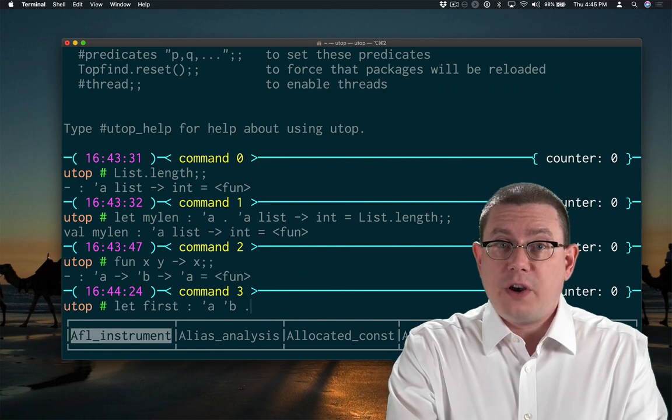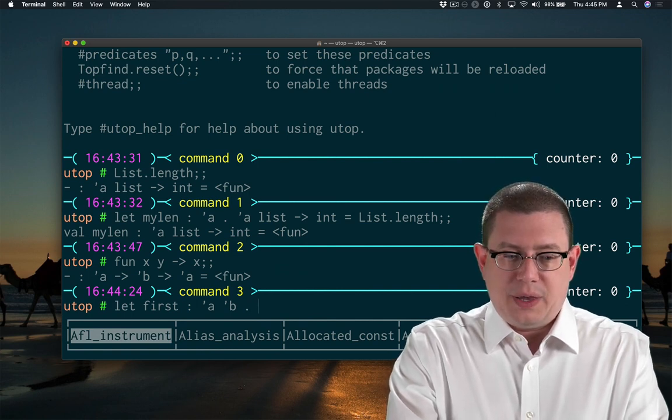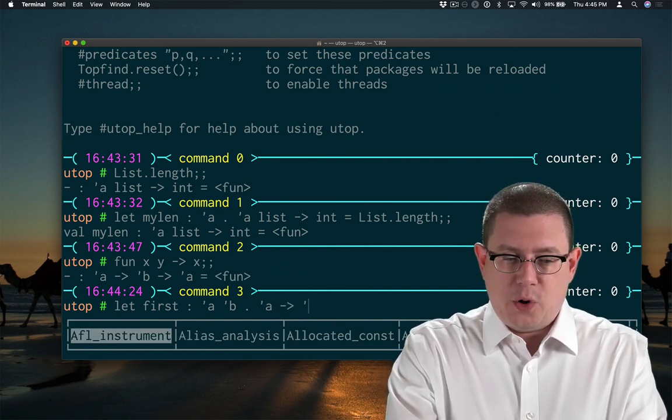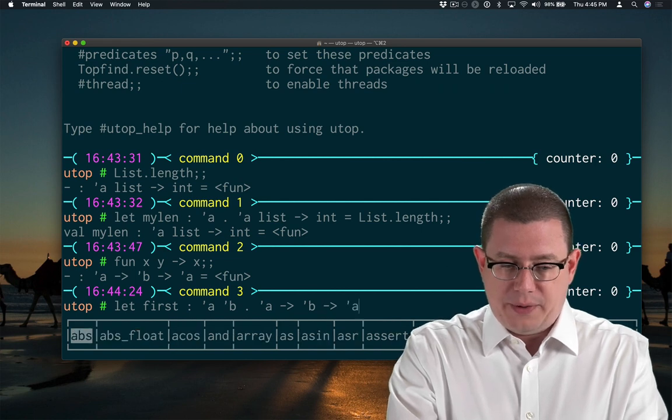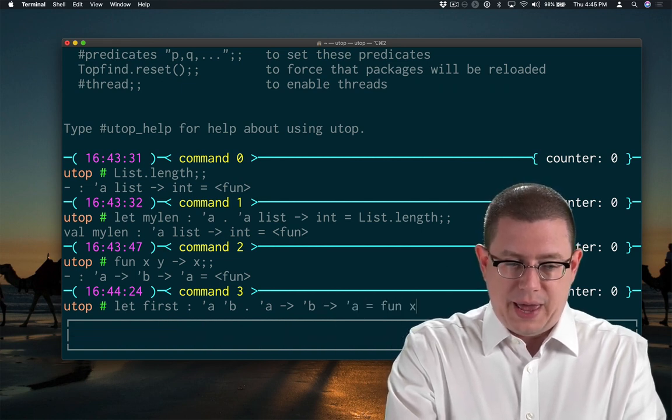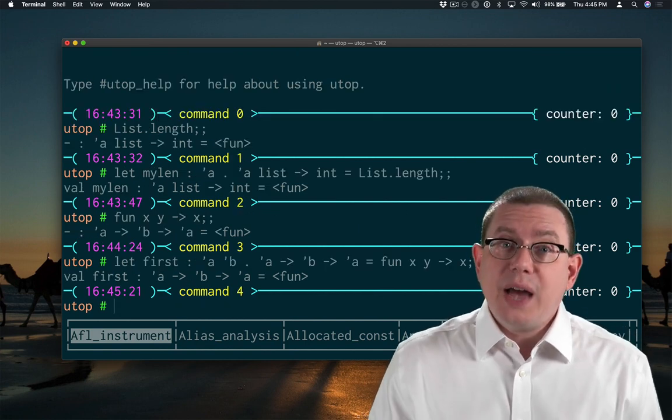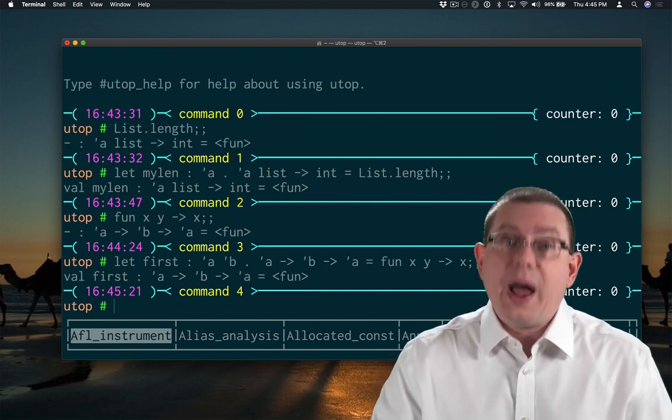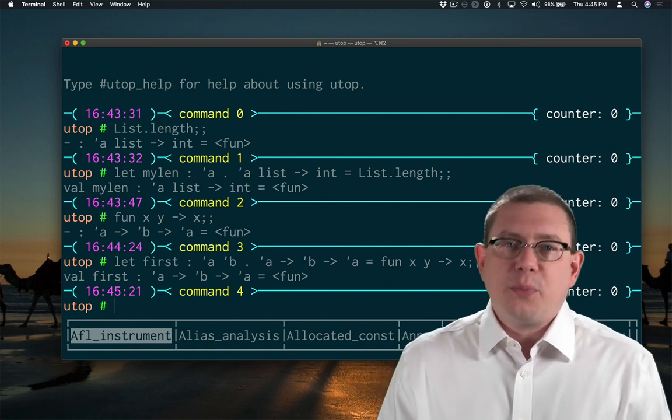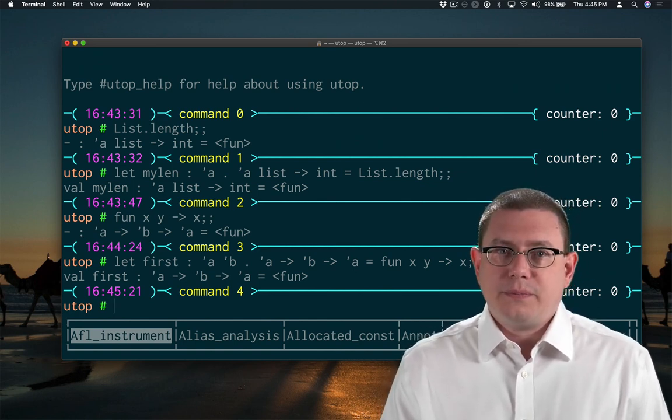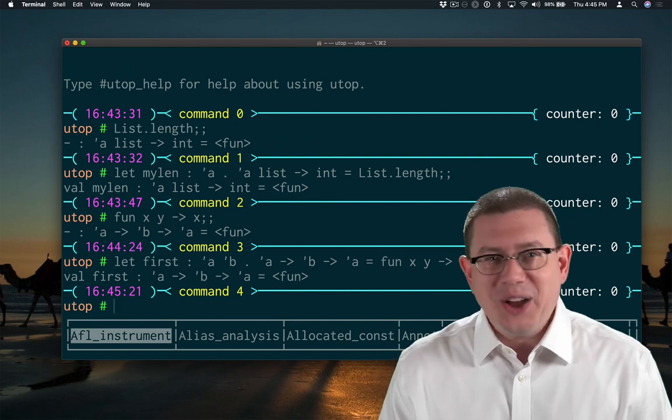And the type is actually alpha arrow beta arrow alpha. And that's going to be fun x y arrow x. So OCaml accepts my type scheme as an annotation there. It is correct. But then just doesn't bother to print it back out as part of the output. But it's always there and always has been.